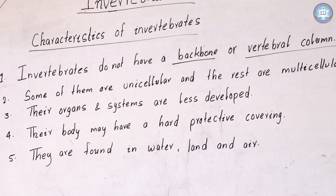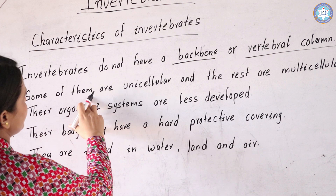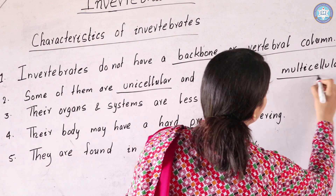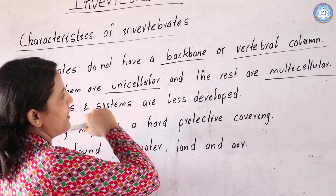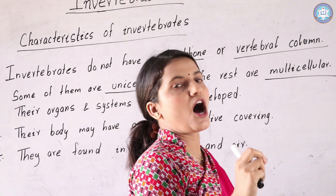The next characteristic is: some of them are unicellular and the rest are multicellular. Unicellular means the invertebrate is made of only one cell. Multicellular means they are made of two or more cells.